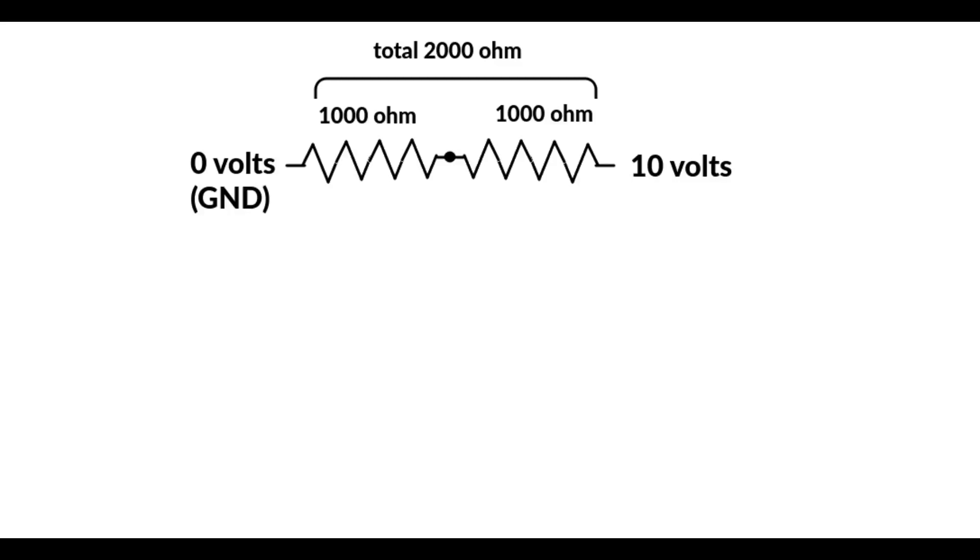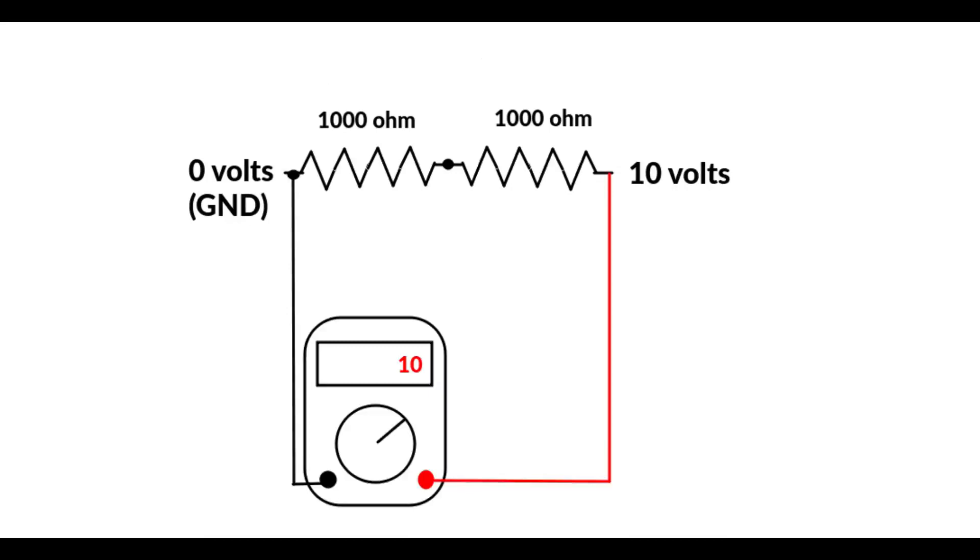A voltage divider is just using a couple of resistances in series and taking a measurement from the middle. You might have two 1000 ohm resistors in series like you see here for a total of 2000 ohms. Now if you were to apply 10 volts to the outside leads, you would of course measure 10 volts. If you were to move one of the leads so both leads were at the same point, you would of course read 0 volts. But if you were to leave the black lead over on 0 volts, also known as the ground, and move the red lead to the connection between the two resistors, you would read 5 volts.